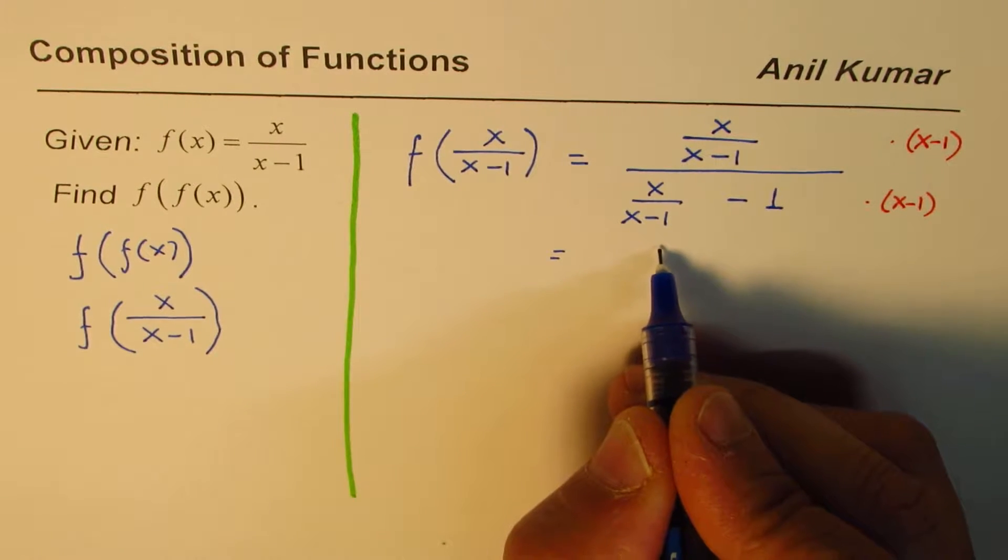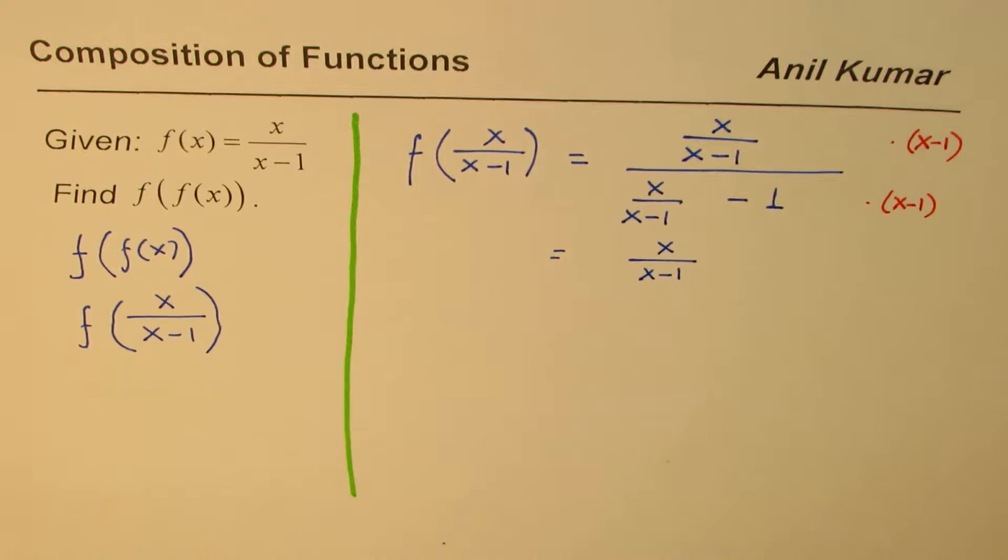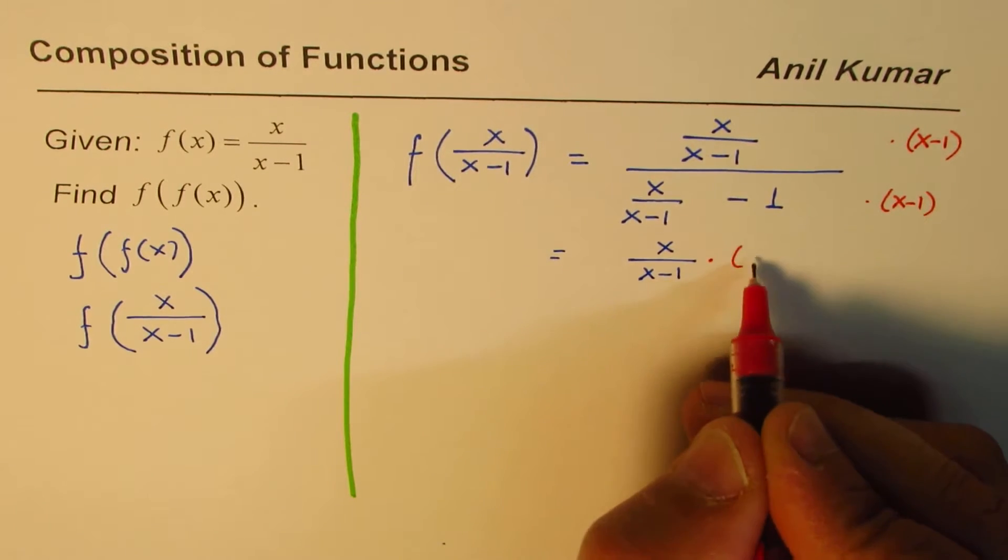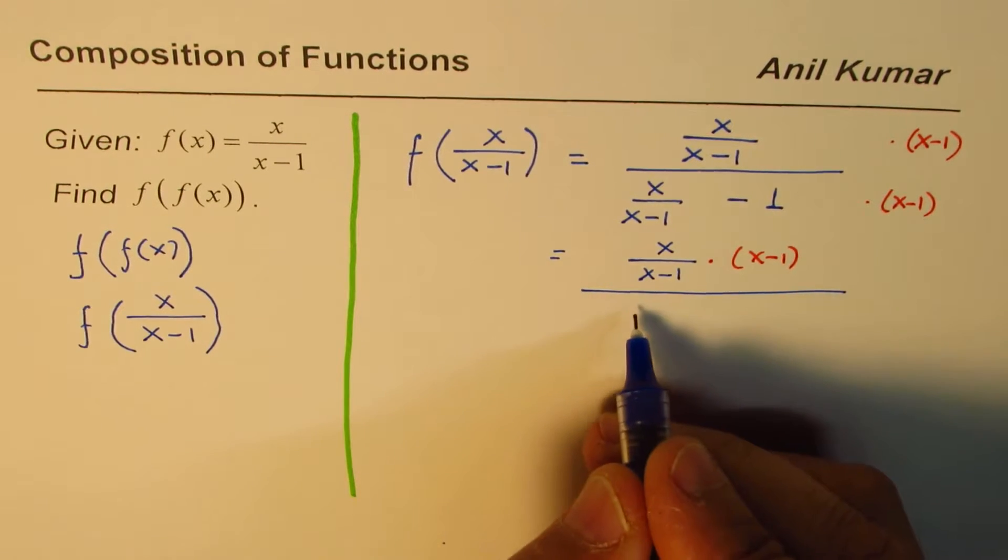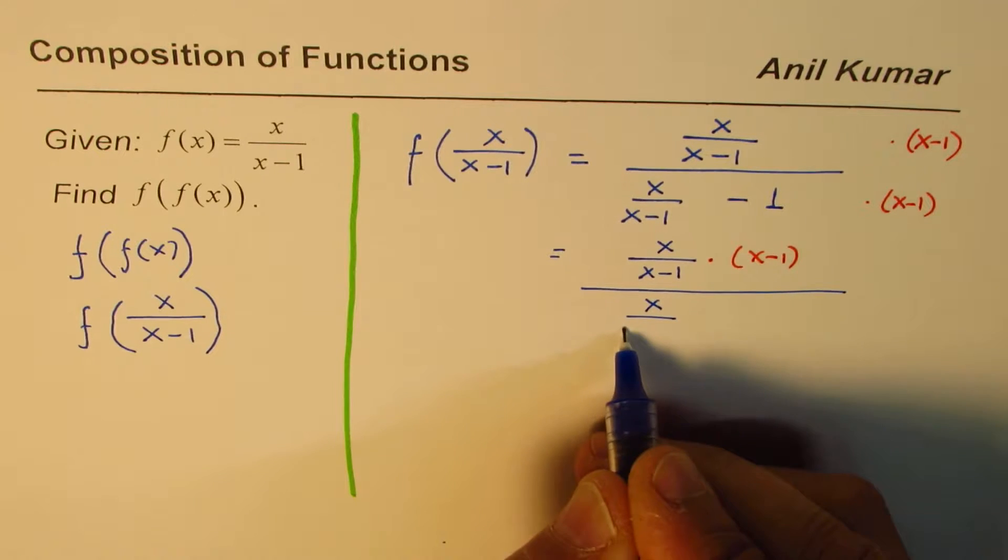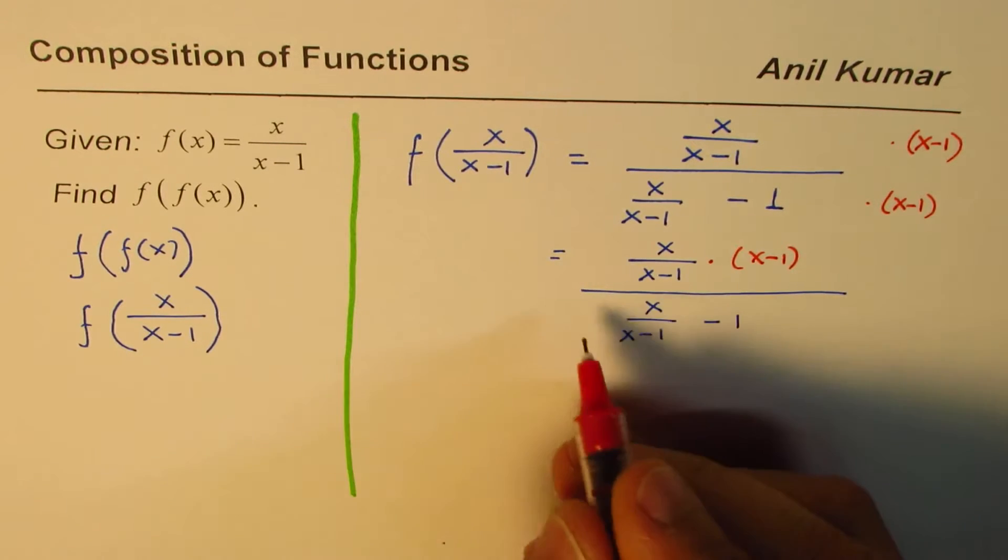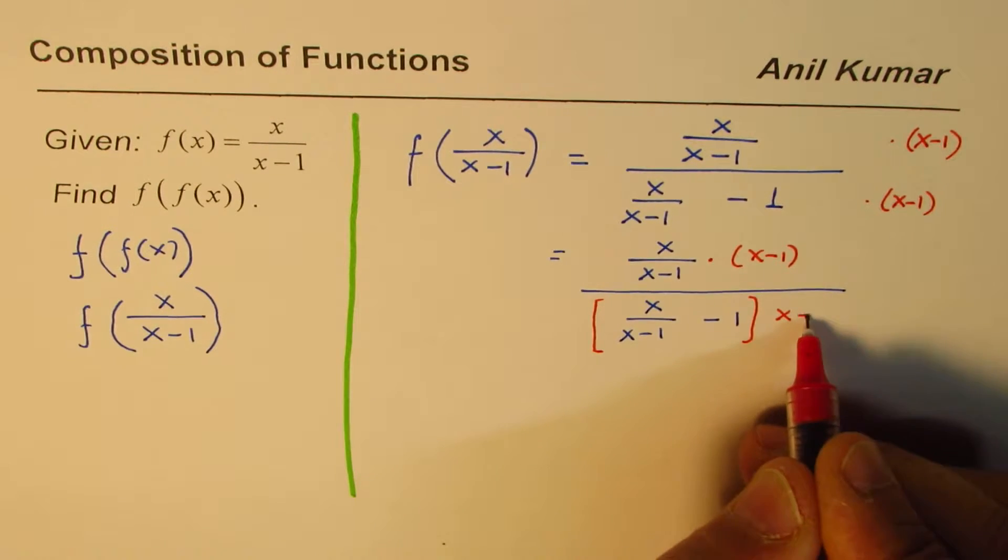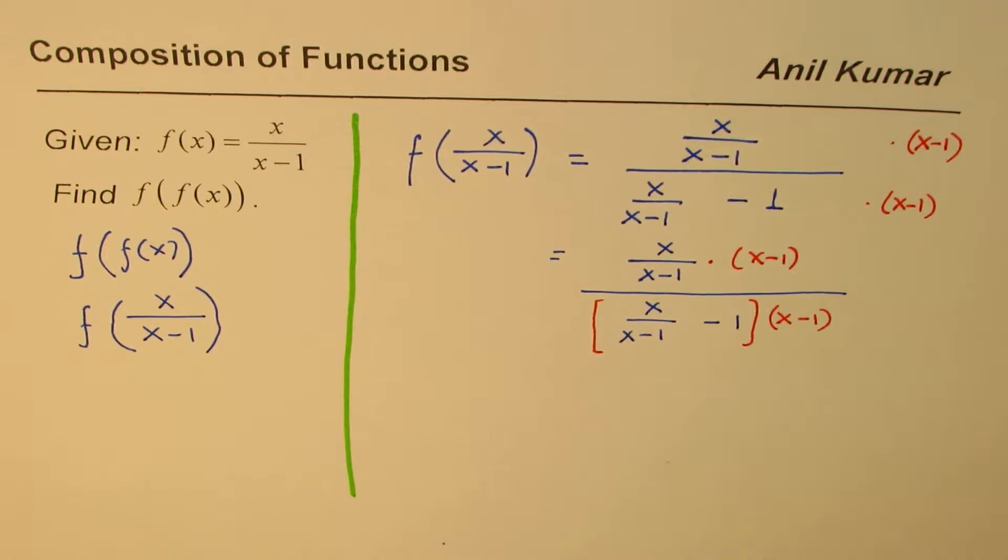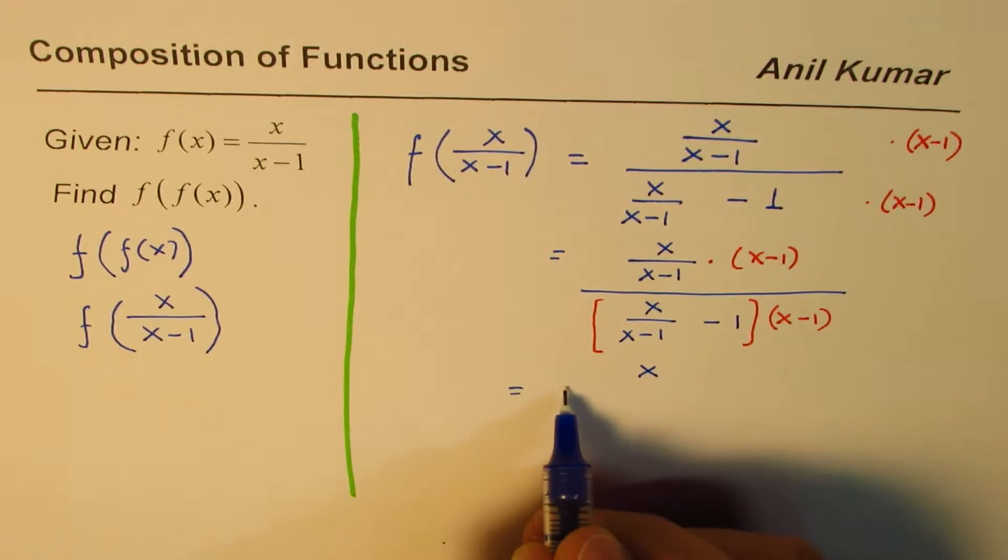So if I do that, let me do it in two steps. We have x over x minus 1, I'm multiplying this by x minus 1. And the denominator which we have is x over x minus 1 minus 1. So the whole denominator, I'm going to multiply by x minus 1.